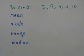Range describes how spread out the data set is. To find the range, subtract the least number in the set from the greatest number in the set.